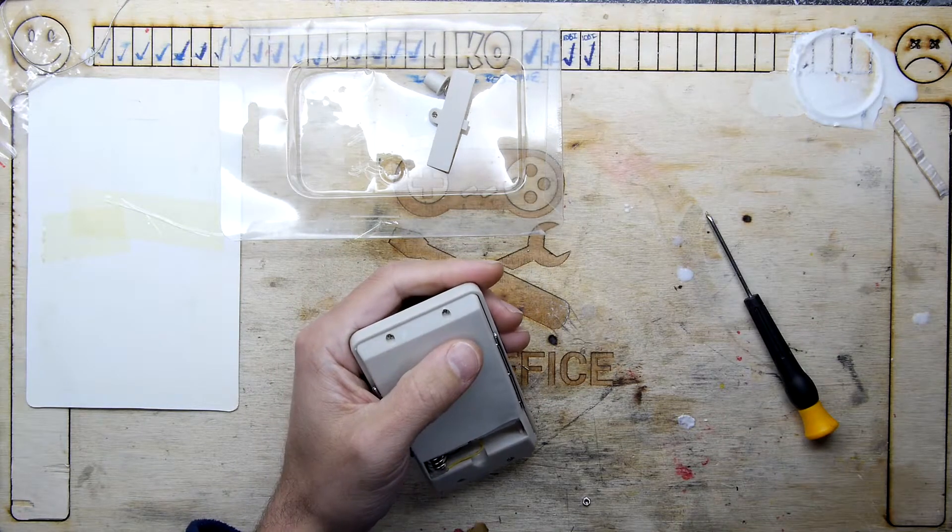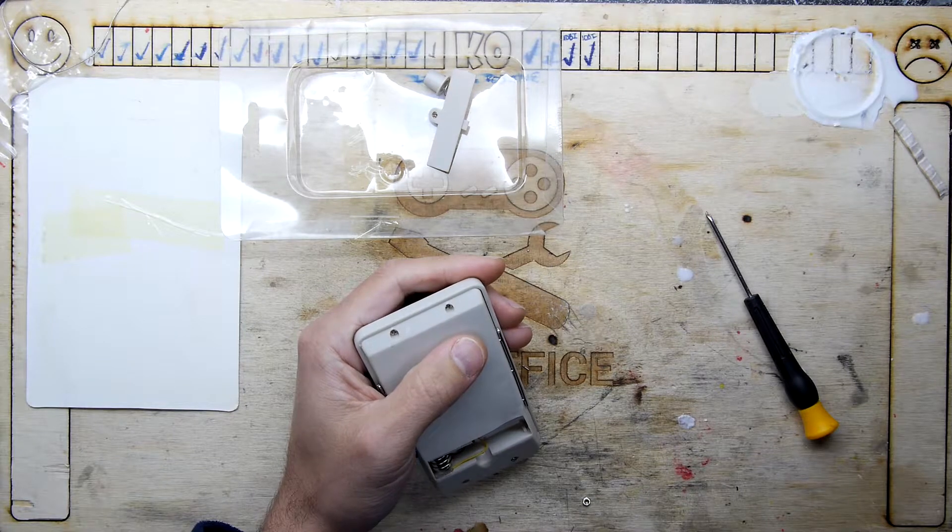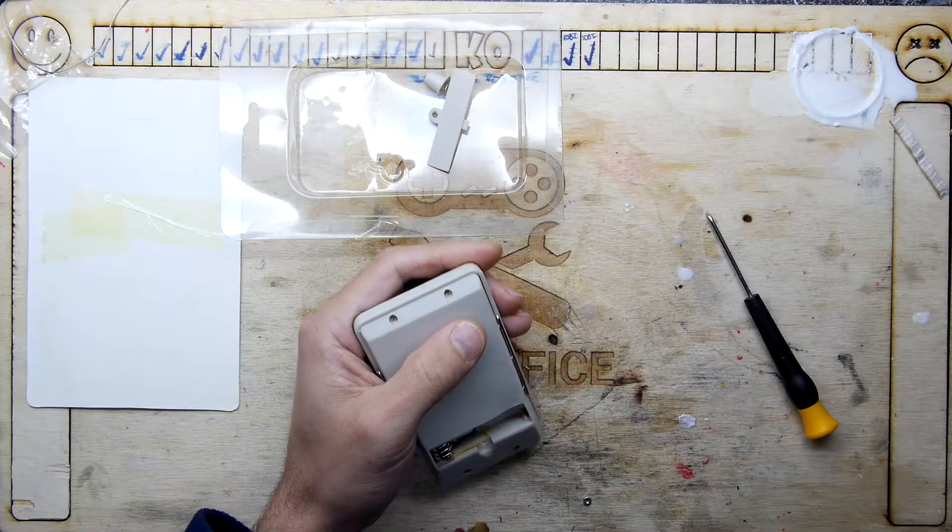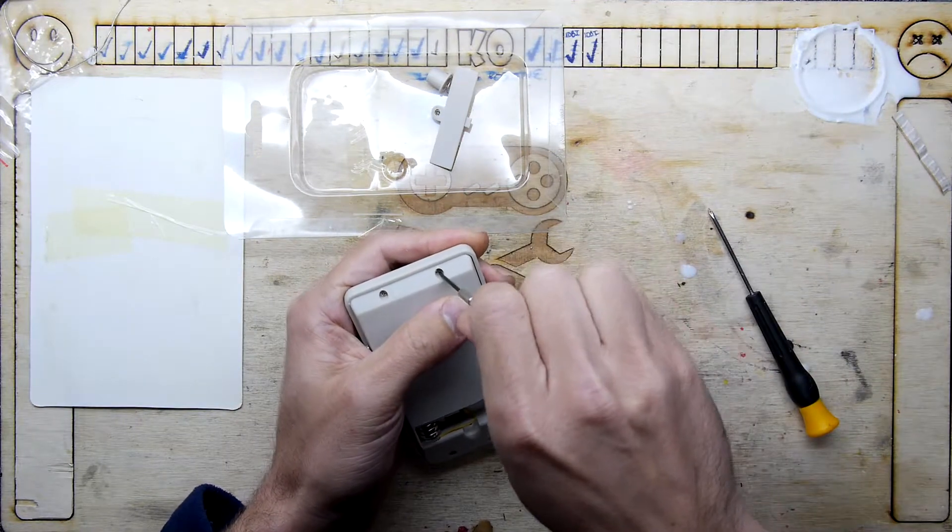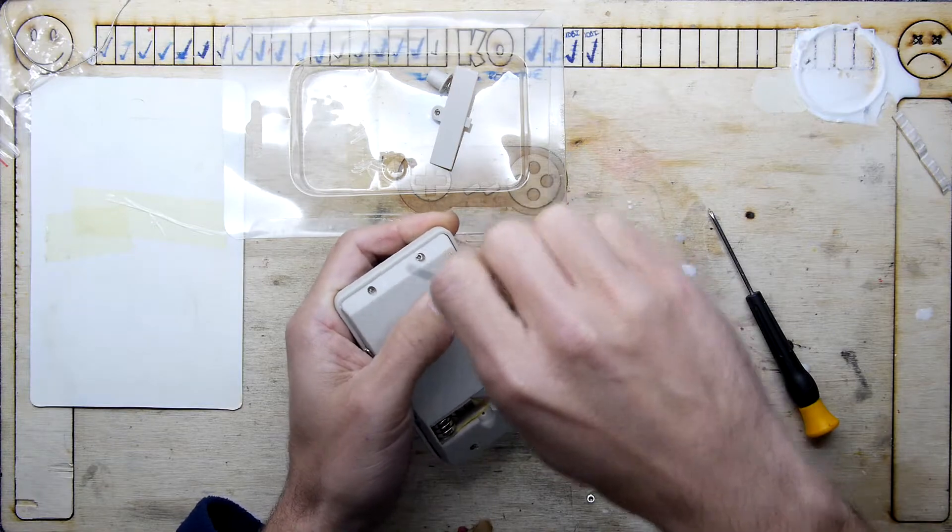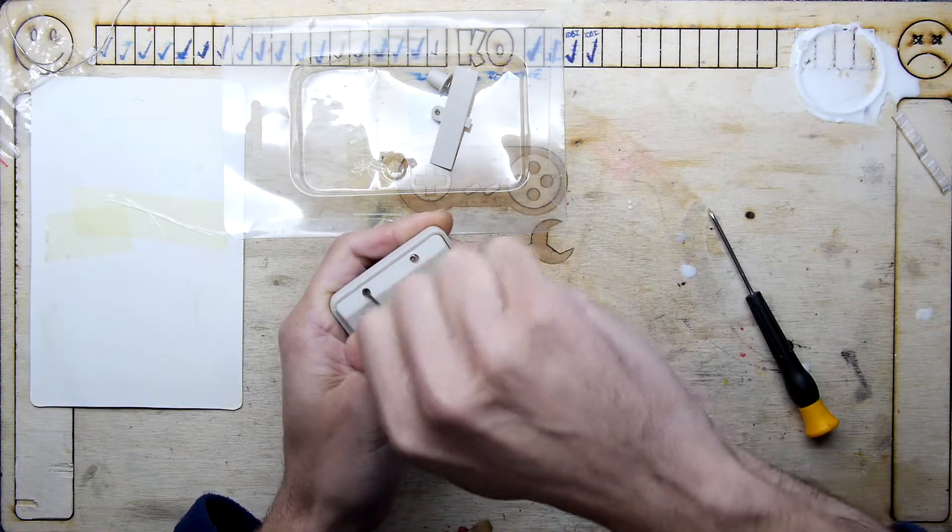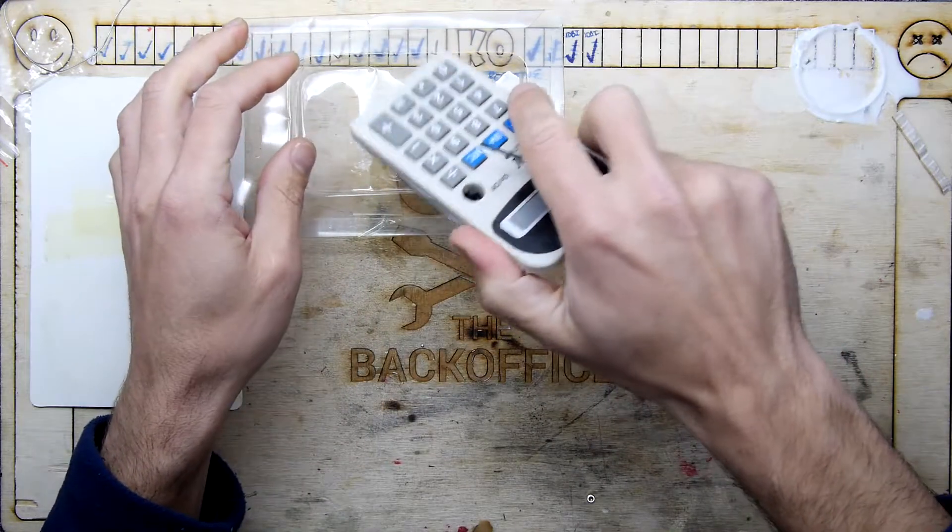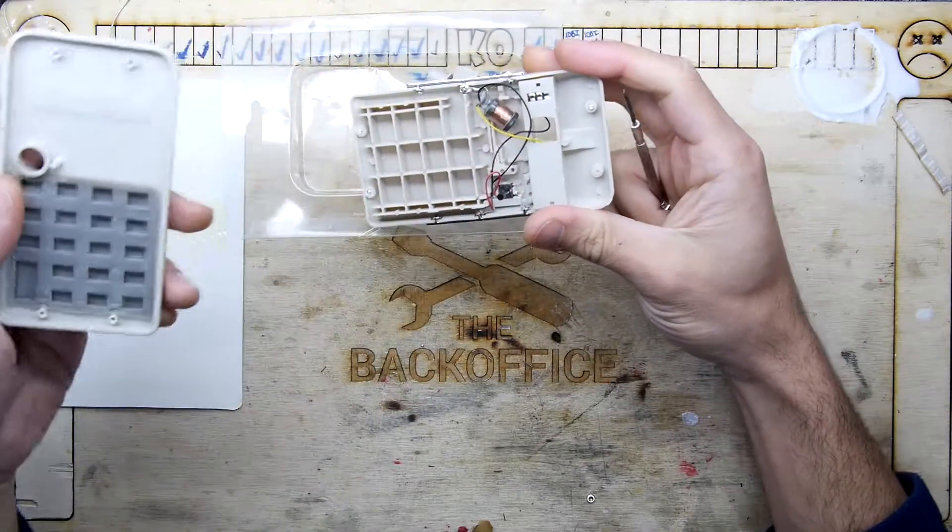I'm just looking through my various screwdriver bits just to see if there's something that might just bite enough. Sometimes a slot head might just bite enough. Yes, so the slot head's biting enough there. I could have used the slot head on the sticky one, but that's okay, we can use that to drive it back.